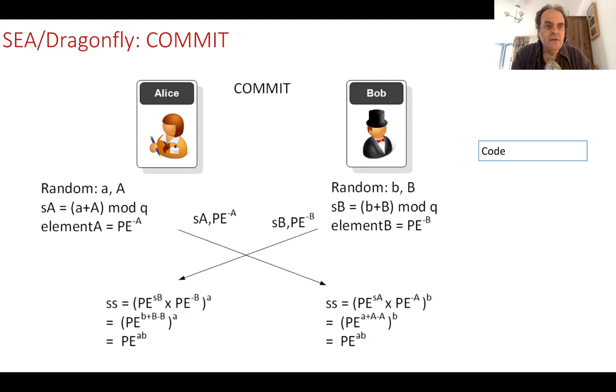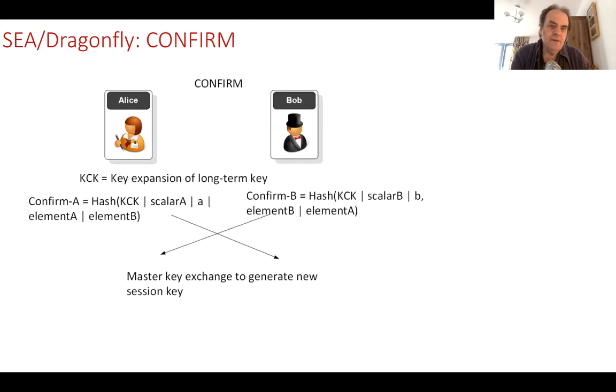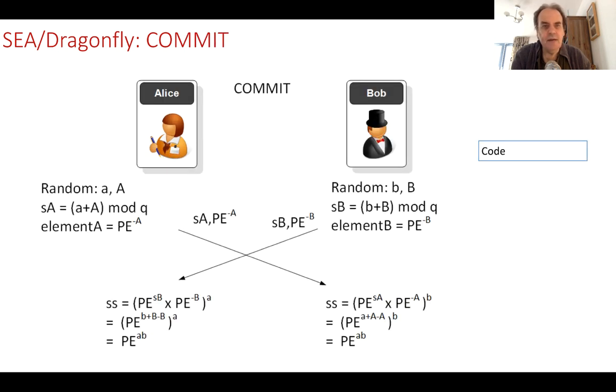So there are two phases to this authentication with WPA3 personal. One is the commit where we initially pair with the access point, and then after that we get a confirm. The confirm is when we have actually been through the commit phase. We can confirm many times but at any time we can go back to the commit phase. The way it works is through the Dragonfly method. Initially Alice and Bob - this could be the client and this could be the access point, we call them Alice and Bob just now - they generate two random numbers A and B.